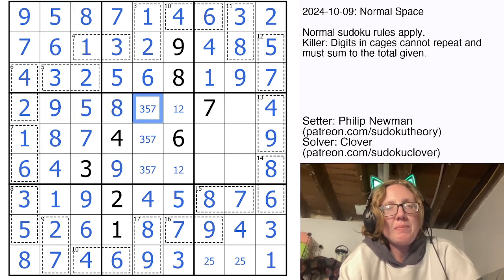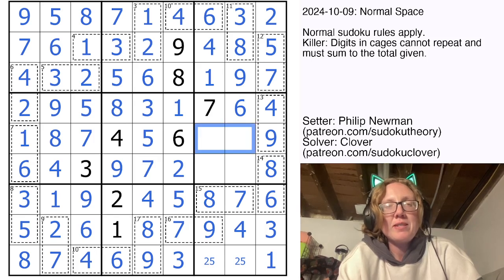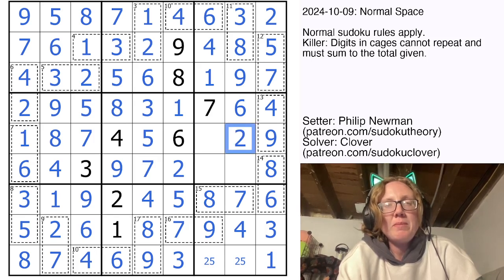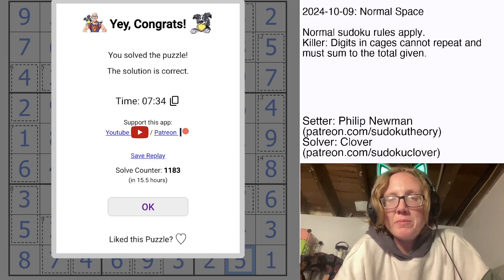Okay, that can't be 5 or 7, so that's my 3. This can't be 7 because there's a 7 in the row, so that's my 5. I have a 2 in this row now, so that's a 1 and a 2. This is now a 6. My digits to finish this row are going to be 2 and 3, and my digits to finish this row will be 5 and 1. And that resolves the remainder of Normal Space by Philip Newman.